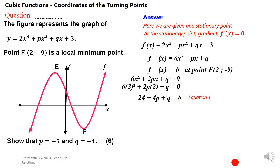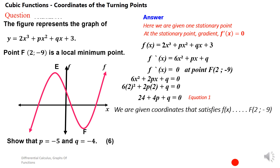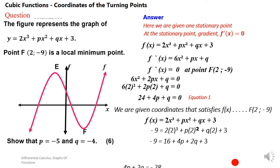The second calculation: we have the coordinates of point F as (2, -9). Each time we are given coordinates on a graph, those coordinates satisfy the equation of that graph. So in this equation, when x = 2, y = -9. We substitute -9 in place of y and 2 in place of x, then simplify. That gives us another equation expressed in terms of p and q — equation 2.